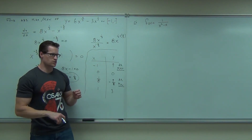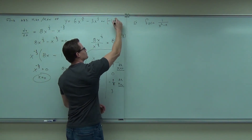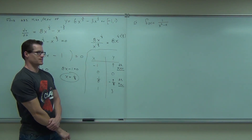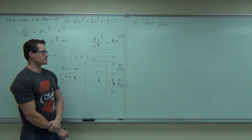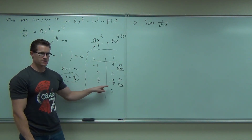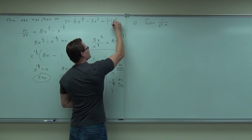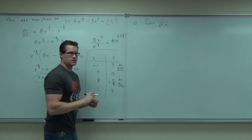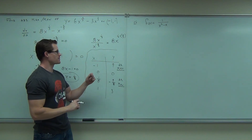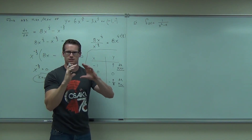Let's say I changed the interval. Do I still have an absolute max? Yes — that endpoint is still there, I didn't get rid of it. Do I have an absolute min? Yes — and that's not an endpoint, so I still have it. Now if I remove that left endpoint, is there an absolute max? No — negative one is gone, so no absolute max. Absolute min? Yes, that's still there. Are you starting to see how the endpoints play a factor in what you're doing?